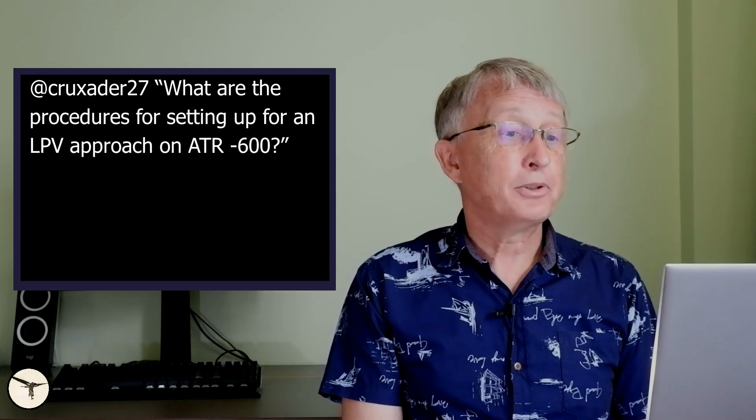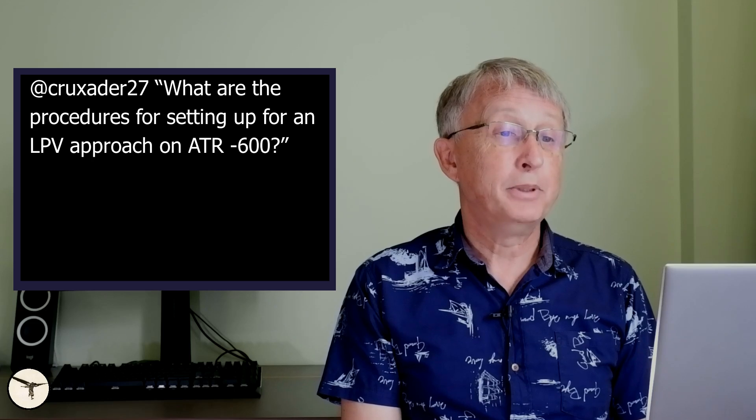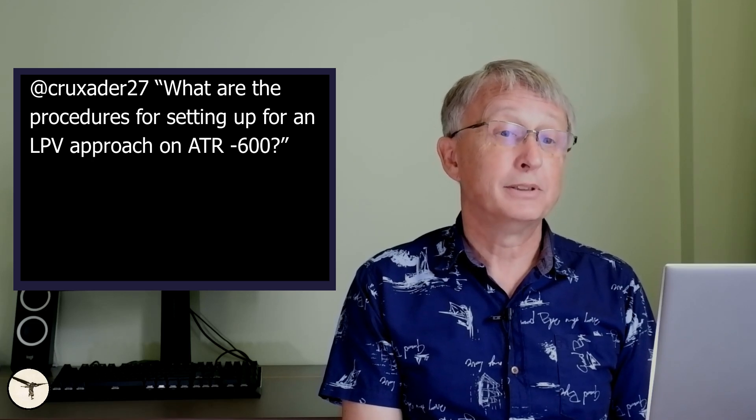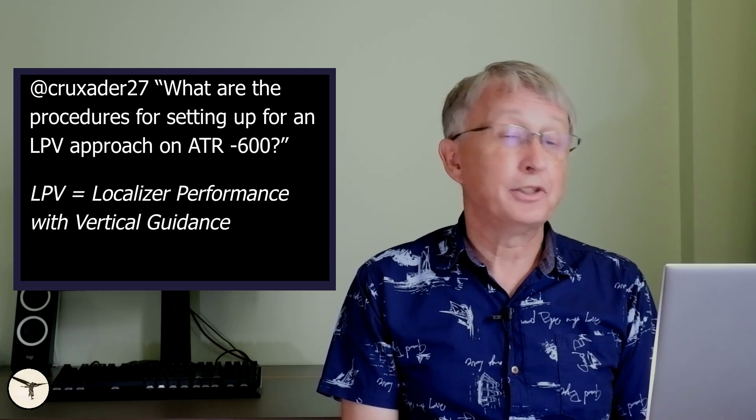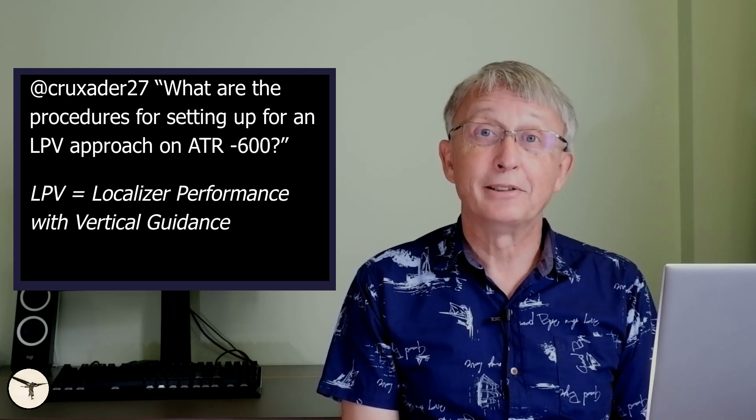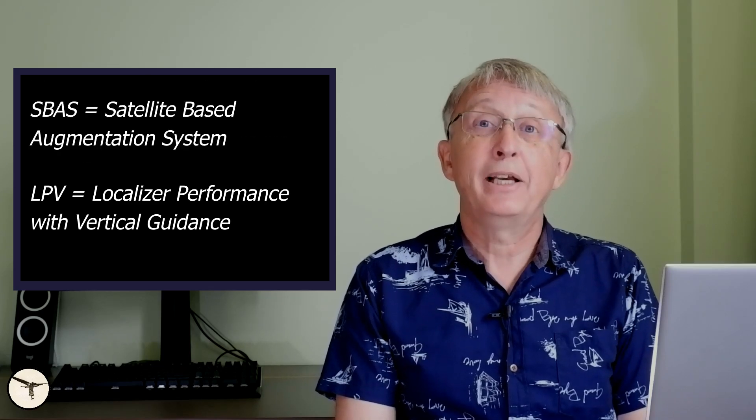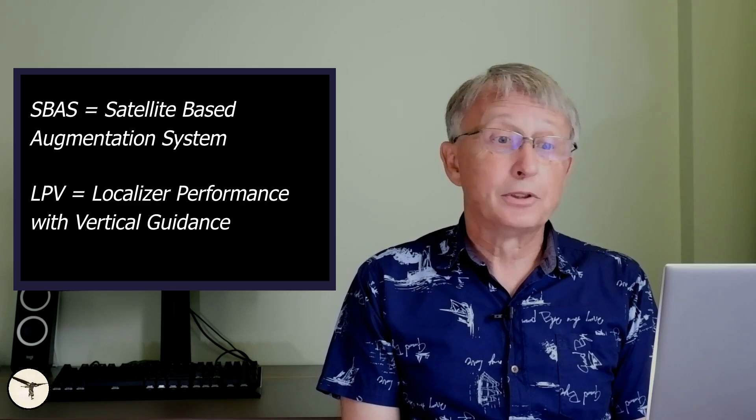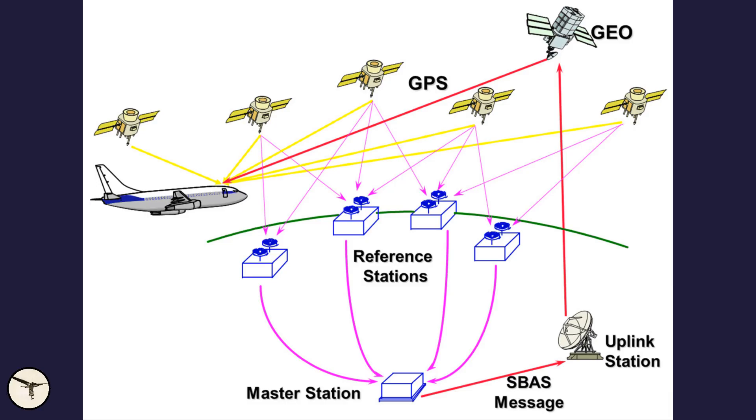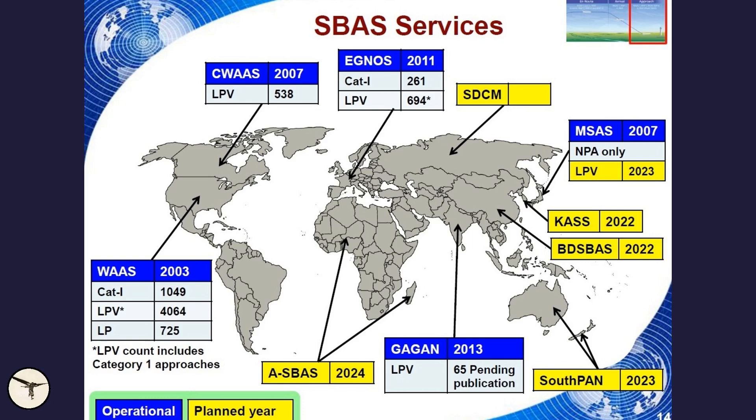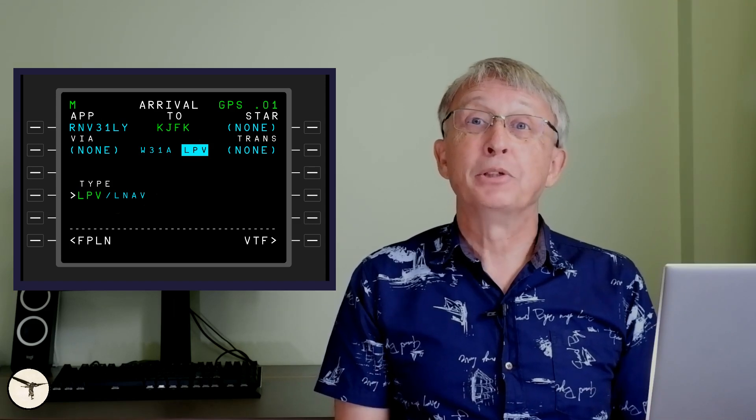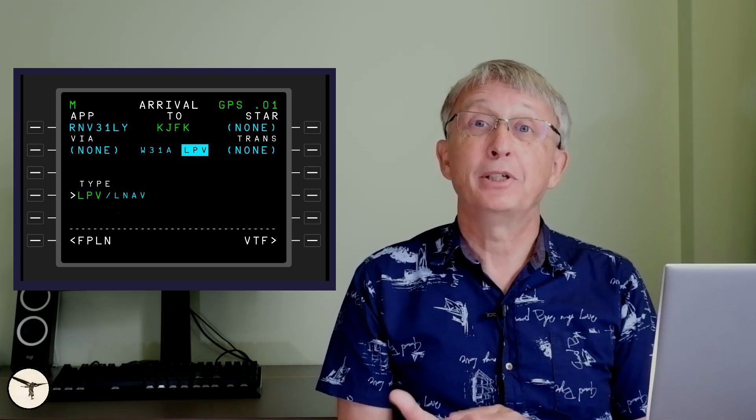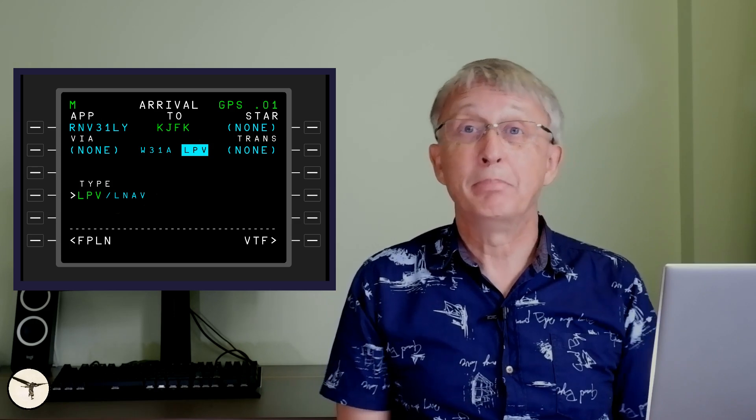Next. What are the procedures for setting up an LPV approach on ATR 600? LPV means localized performance with vertical guidance. And that requires SBAS and a modification to the aircraft. This is not available where I am flying today, so I have in fact never flown an SBAS-based procedure like LPV. When you have it available, that option will be in the MCDU when you set up the approach. Simple as that.